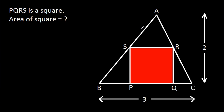In this video, we have been given a triangle ABC with base 3 and height 2, and PQRS is a square. We have to find the area of the square.